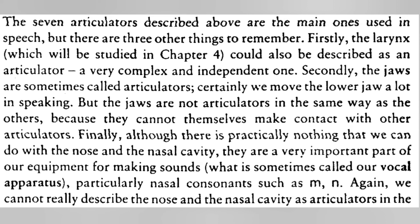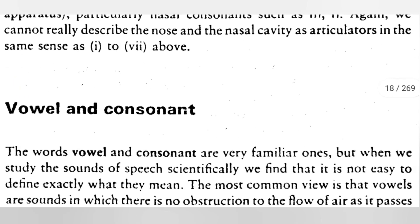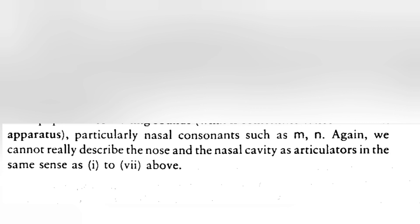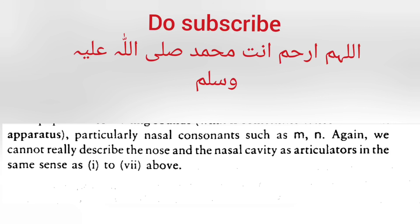The seven articulators described above are the main ones used in speech, but there are three other things to remember. Firstly, the larynx, which will be studied in chapter four, could also be described as an articulator — a very complex and independent one. Secondly, the jaw is sometimes called an articulator; certainly we move the lower jaw a lot in speaking, but the jaw is not an articulator in the same way as the others because it cannot itself make contact with other articulators. Finally, although there is practically nothing we can do with the nose and the nasal cavity, they are a very important part of our vocal apparatus, particularly for nasal consonants such as /m/ and /n/. We cannot really describe the nose and the nasal cavity as articulators in the same sense as the others.